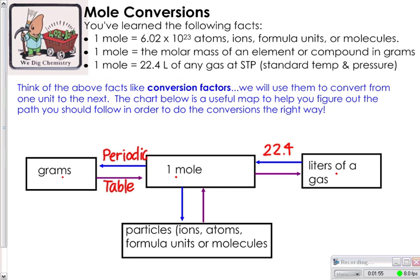And if I want to go from particles, ions, atoms, formula units, or molecules, my conversion factor is Avogadro's number, 6.02 times 10 to the 23rd. This map right here will help you do the next few problems that I'm going to do as an example.